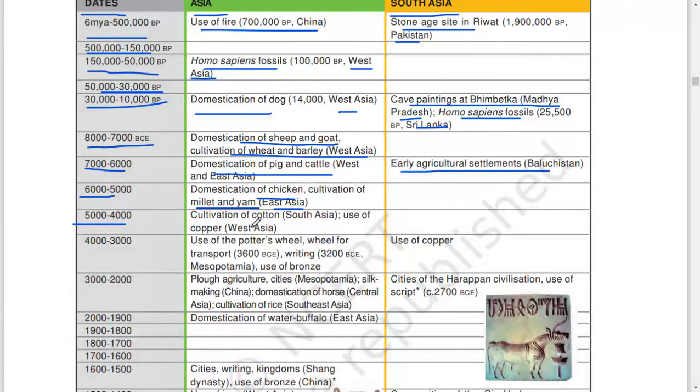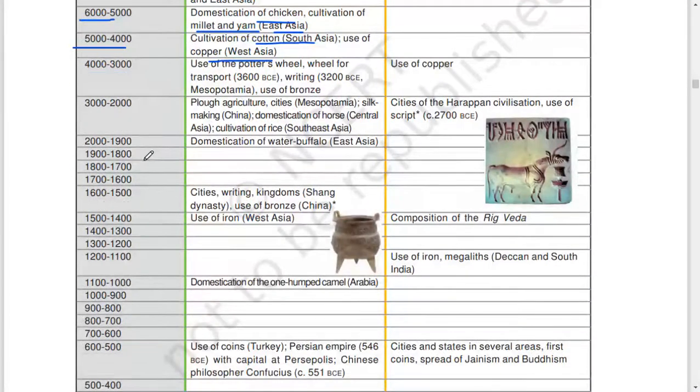5,000 to 4,000: cultivation of cotton, South Asia. Use of copper, West Asia. 4,000 to 3,000: use of potter's wheel, wheel for transport, 3,600 BCE. Writing, 3,200 BCE, Mesopotamia. Use of bronze, use of copper.